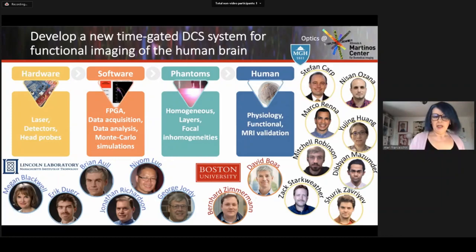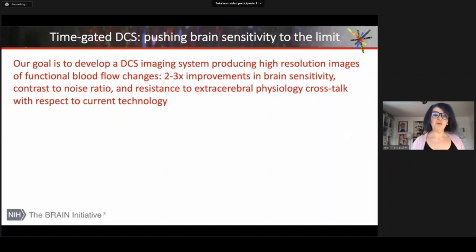Our overarching goal is to develop a DCS system that produces high resolution images of functional blood flow changes in the brain. With respect to current technology, we want to achieve two or three times improvement in sensitivity, spatial resolution and resistance to extracerebral physiology.